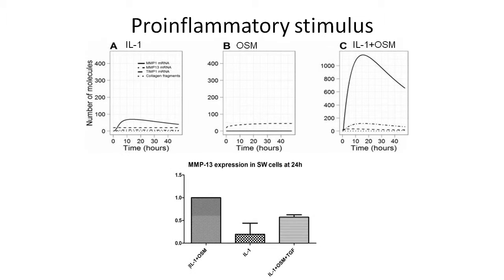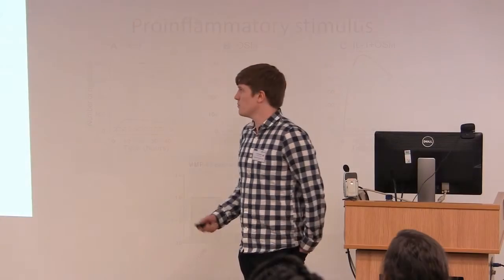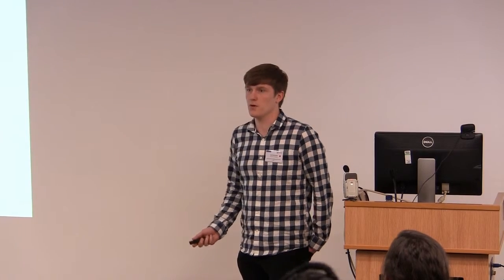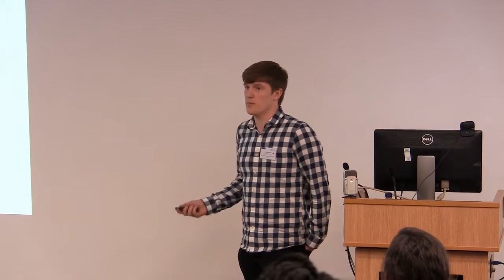Here are some experiments. I'd like to point out that it's not normalised to basal because in control cells the levels of MMPs are really, really low, giving quite high fold changes. Instead I've normalised to the IL-1 and OSM response. You can see that IL-1 alone gives you a much bigger reduction in MMP-13 levels. If you add TGF-beta with IL-1 and OSM, you get about a 45–55% reduction in MMP-13 expression. For simplicity, I'm only going to talk about MMP-13 from now on.